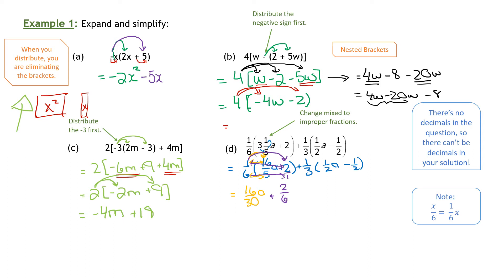Continuing to distribute: positive 1 third comes into the 1 half A. We multiply straight across the top: 1 times 1 is 1, and 3 times 2 is 6, so that's 1 sixth A. And one more: we distribute, we multiply 1 third times negative 1 half. Numerator times numerator is 1, denominator times denominator is again 6, so that's negative 1 sixth.